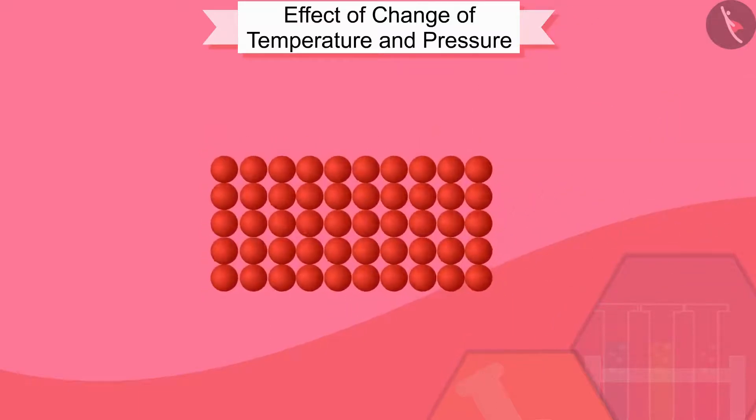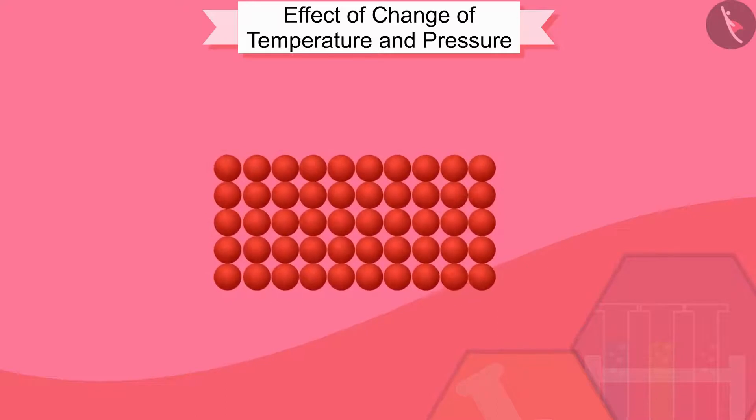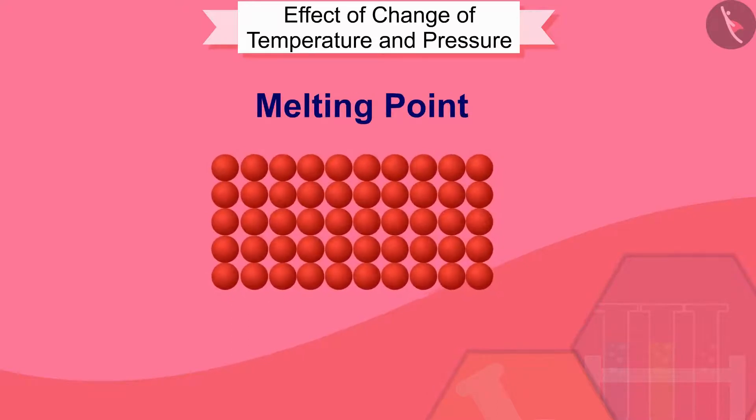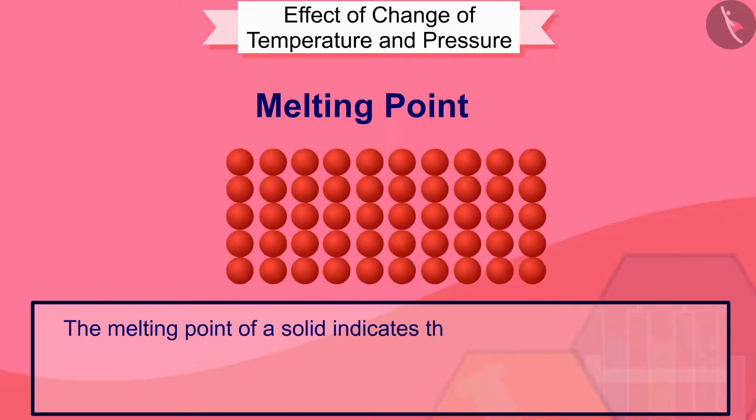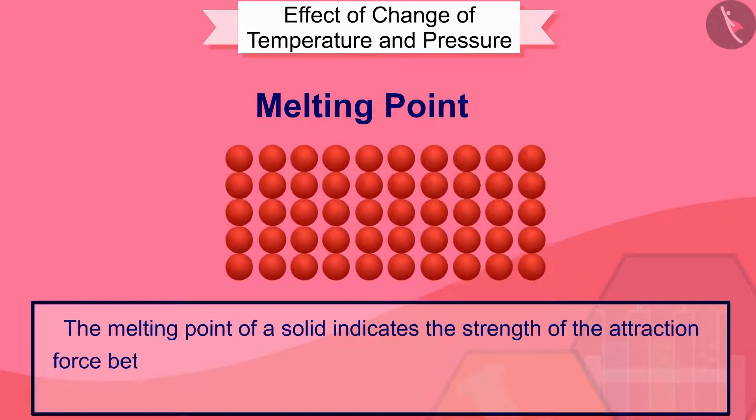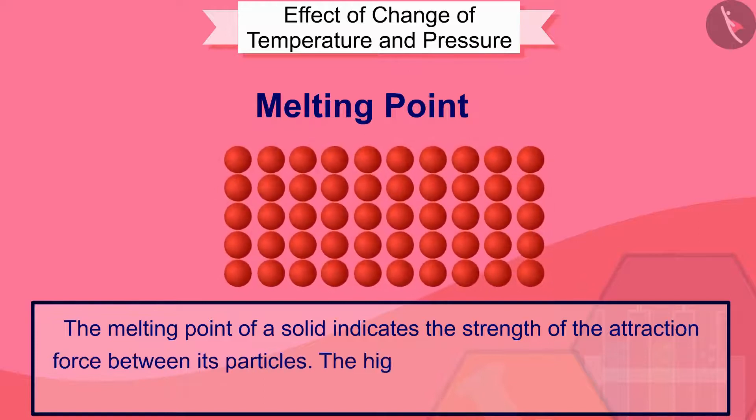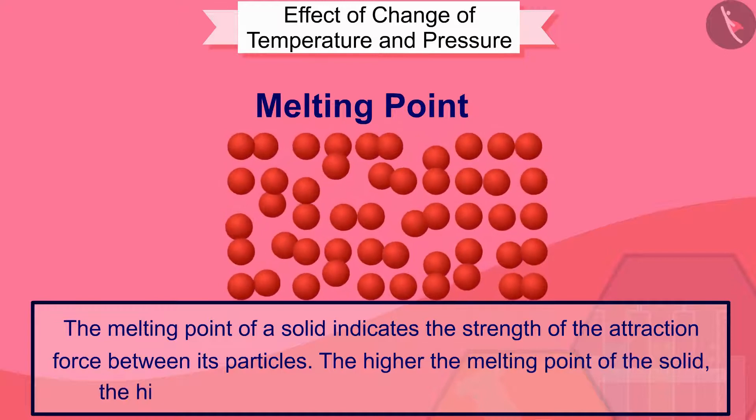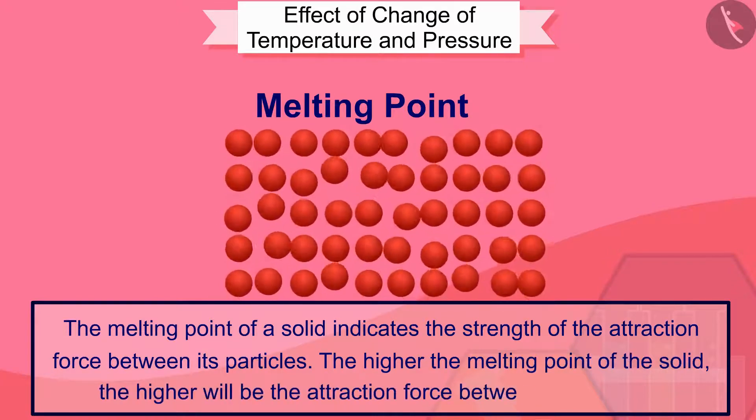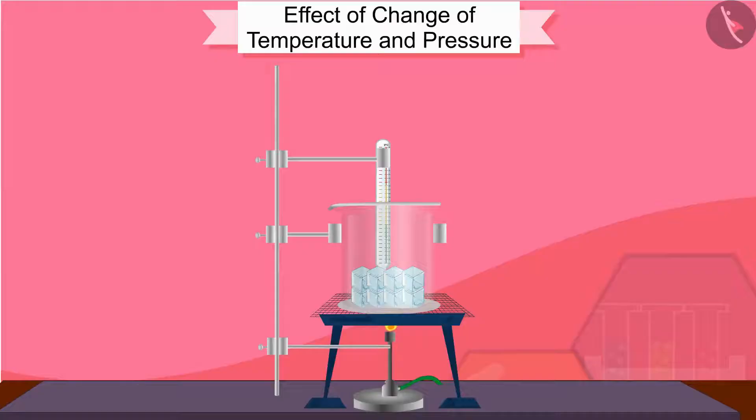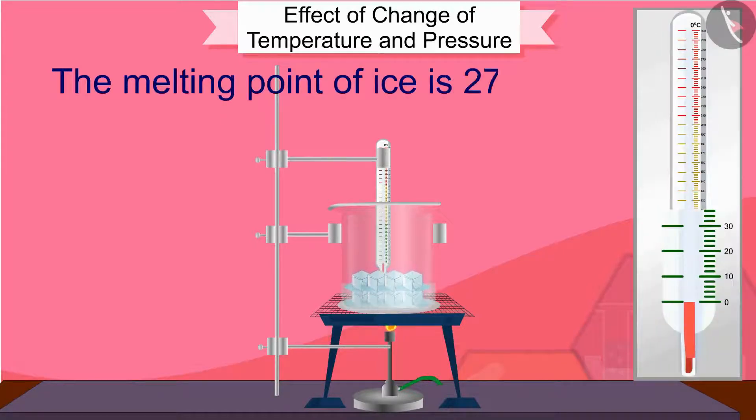The temperature at which a solid melts and becomes liquid is called its melting point. The melting point of a solid indicates the strength of the attraction force between its particles. The higher the melting point of the solid, the higher will be the attraction force between its particles. In this activity, you must have observed that the melting point of ice is 273.15 Kelvin. The process of conversion from solid state to liquid state is also called fusion.